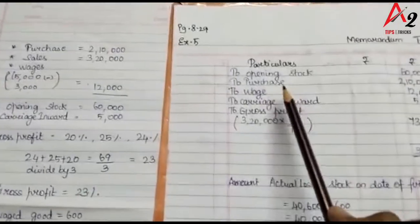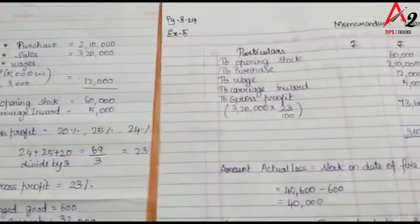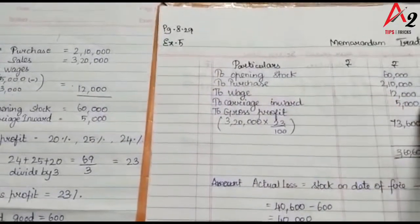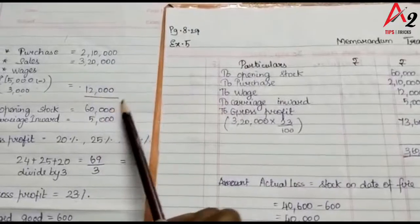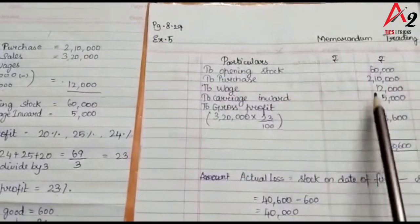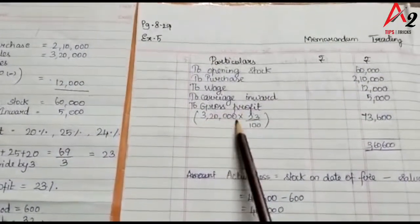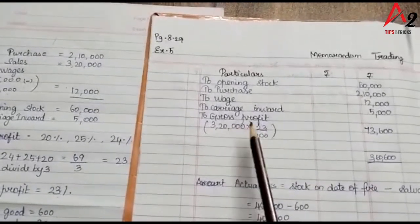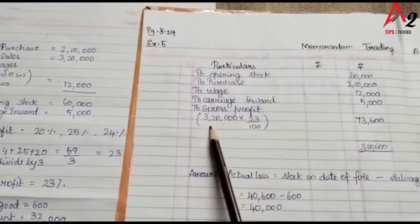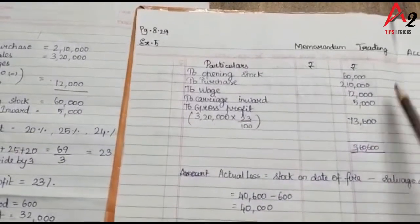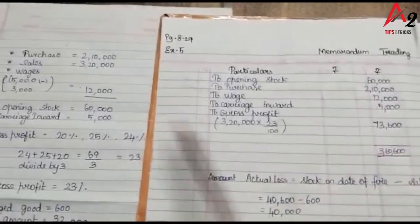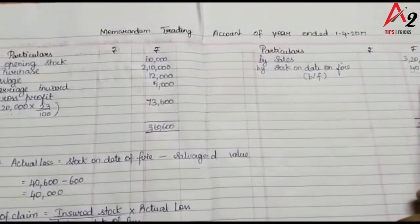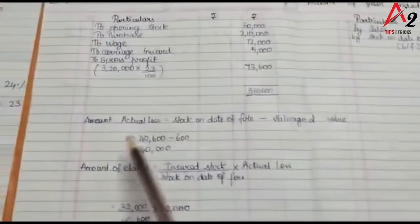Now we set up the Trading Account. Opening stock is $60,000. Purchases $2,10,000. Wages $12,000. Carriage inwards $5,000. Gross profit equals sales into gross profit ratio: $3,20,000 × 23/100 = $73,600. Total debit side is $3,60,600. Sales (credit side) is $3,20,000. Therefore, stock on the date of fire is $3,60,600 minus $3,20,000 = $40,600.